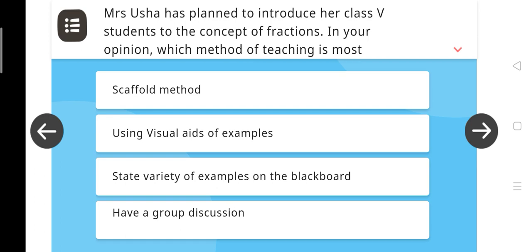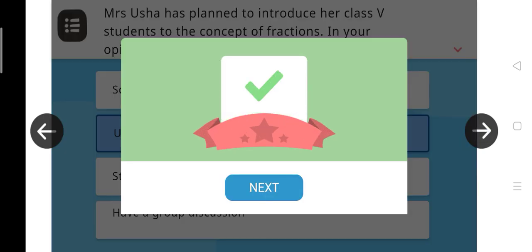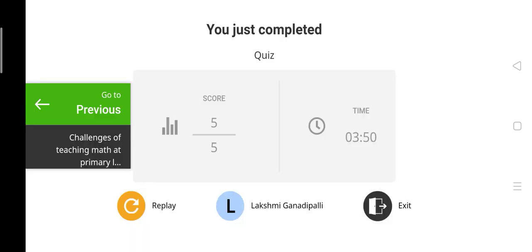And the right answer is using visual aids of examples. Submit. And the score is 5 by 5. Thank you, thank you all.